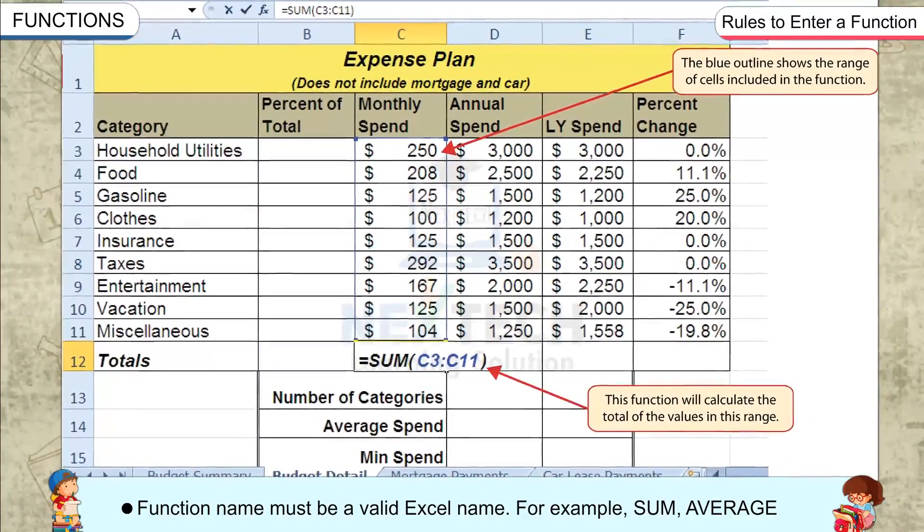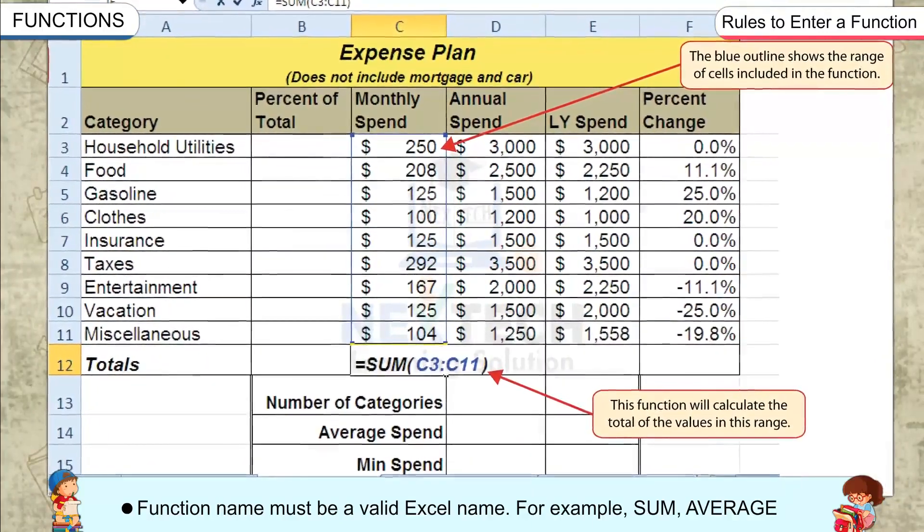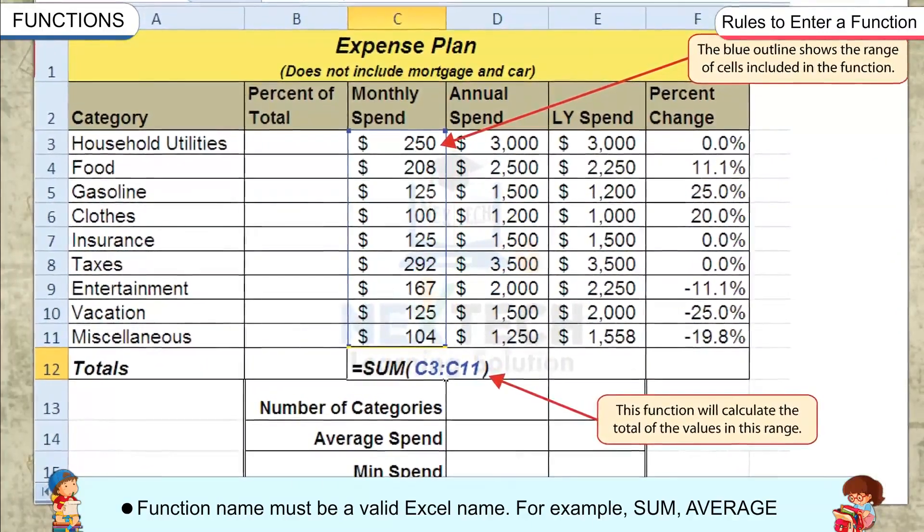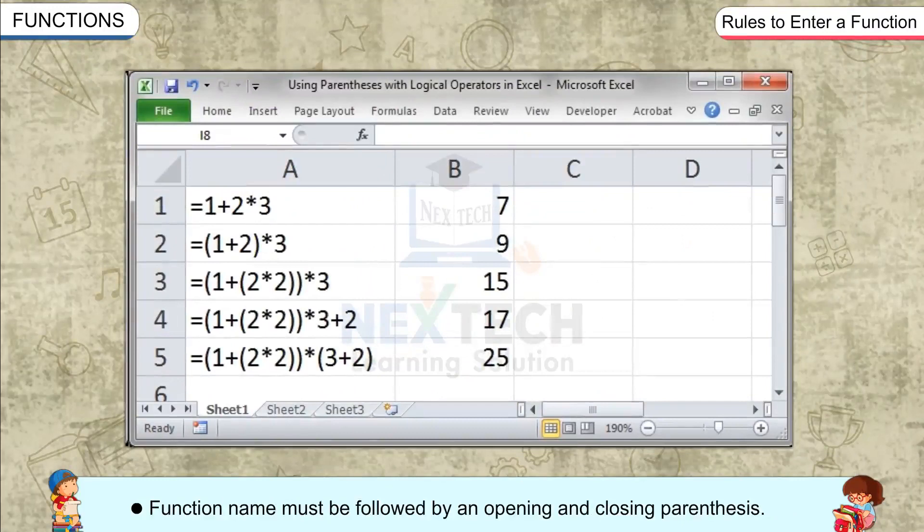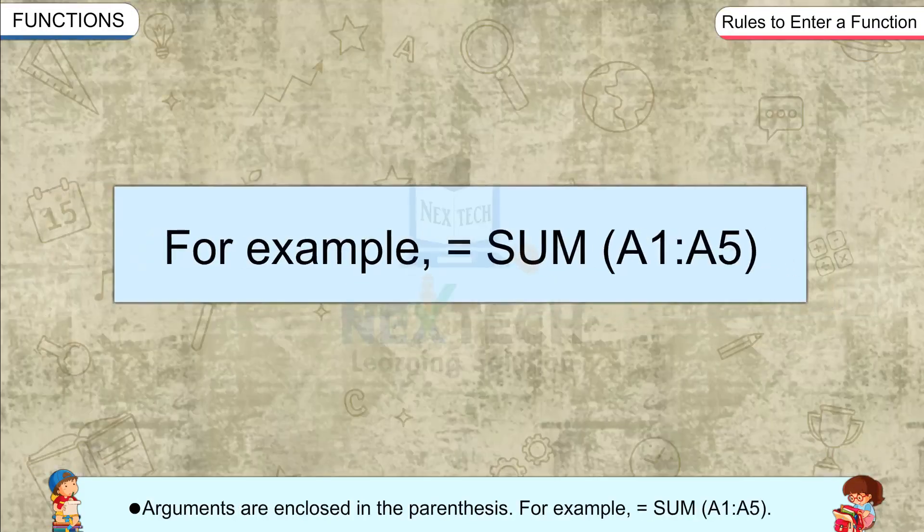Function name must be a valid Excel name, for example, SUM, AVERAGE. Function name must be followed by an opening and closing parenthesis. Arguments are enclosed in the parenthesis. For example, equals SUM A1 colon A5.